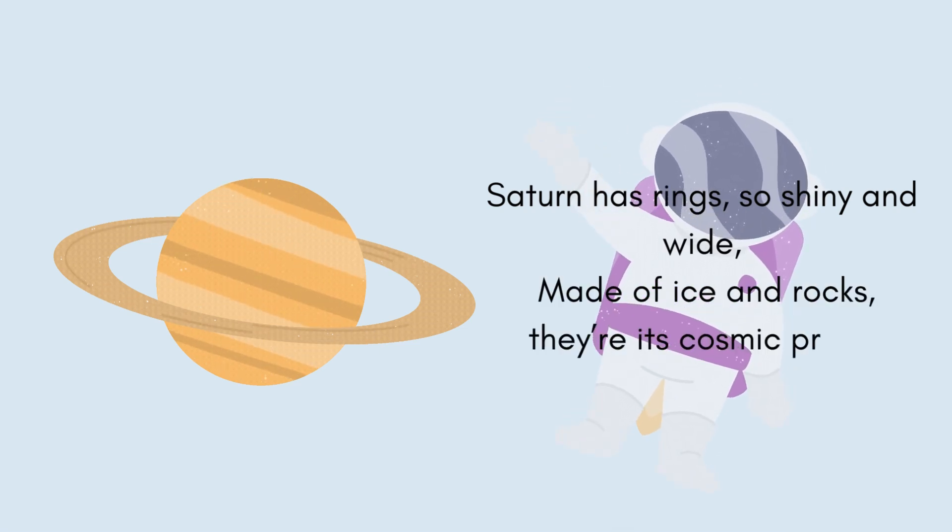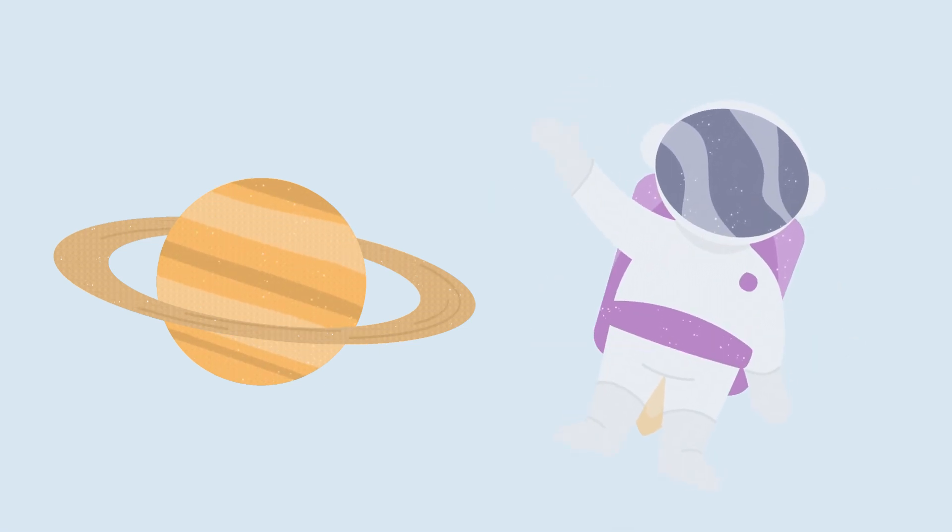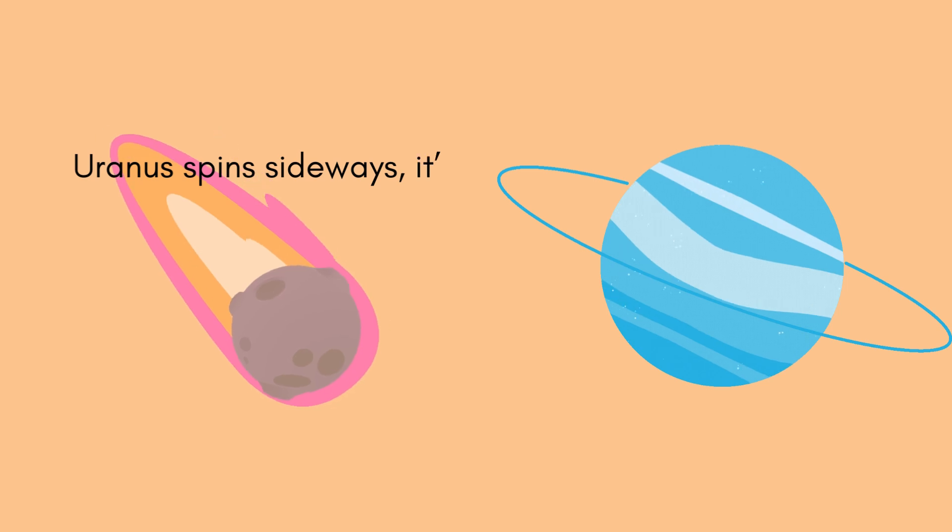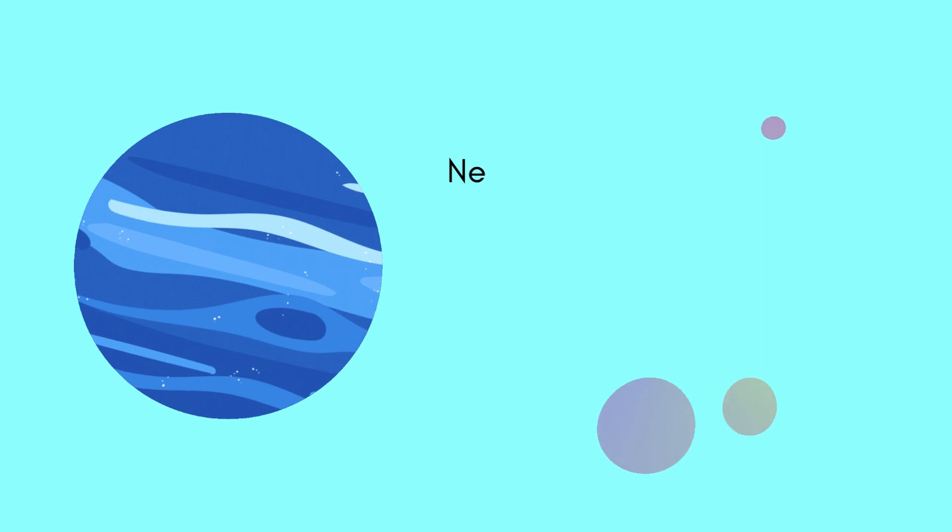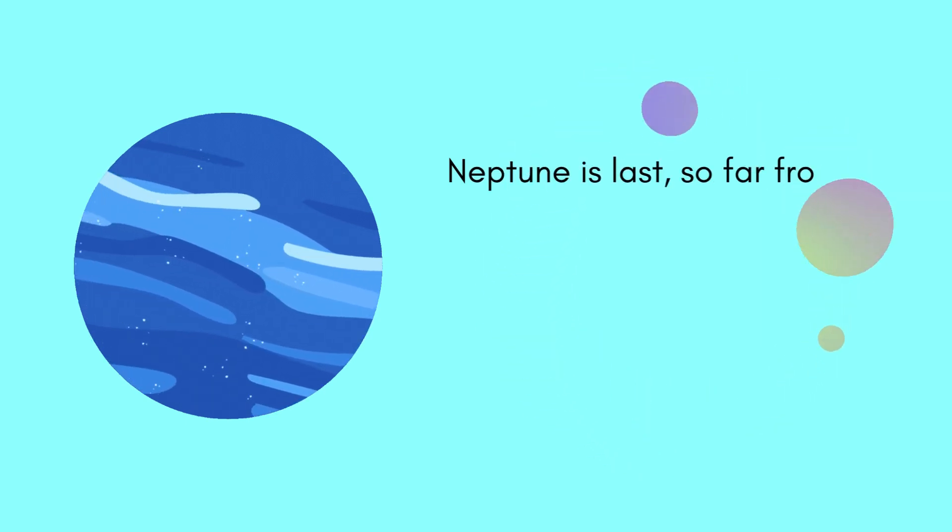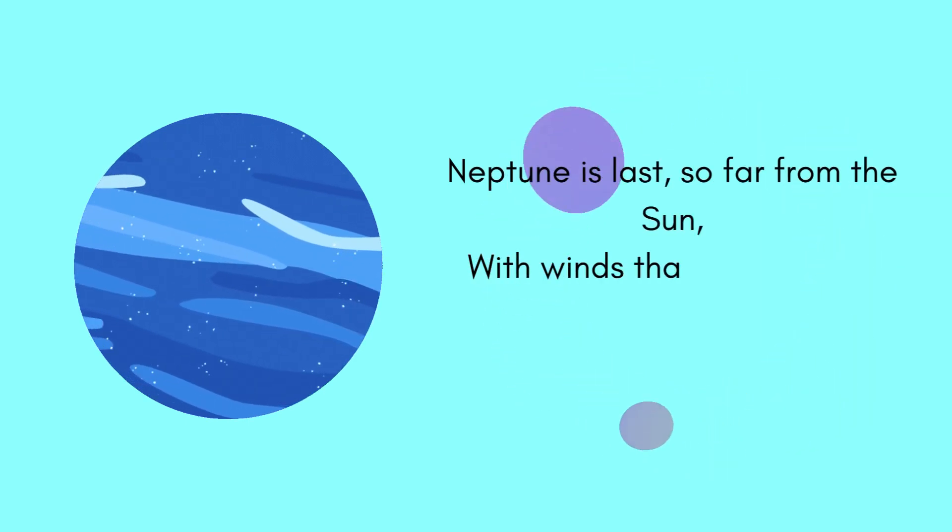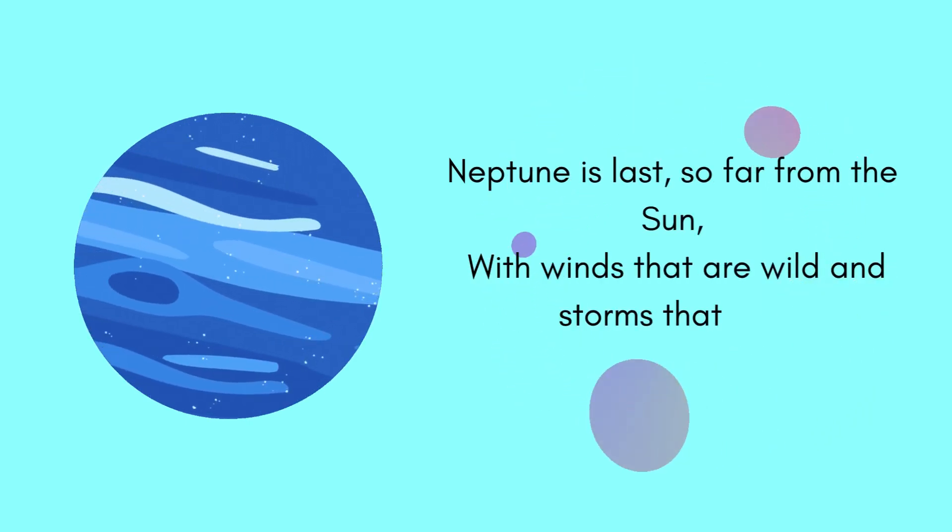made of ice and rocks, a cosmic sight. Uranus spins sideways, it's cool and blue. A planet so strange with a frosty hue. Neptune is last, so far from the sun, with winds that are wild and storms that are strong.